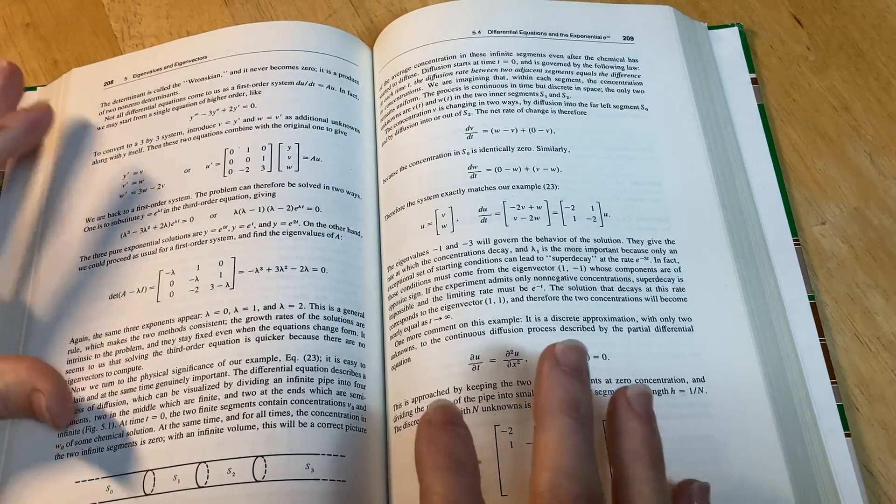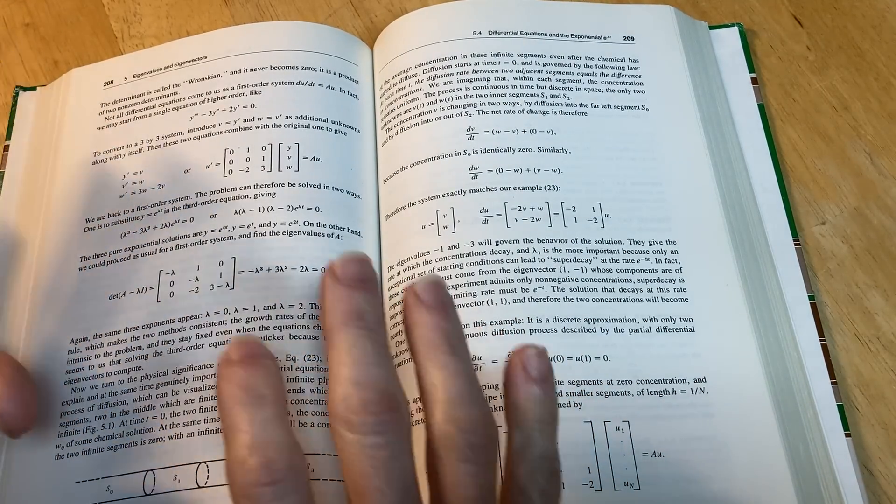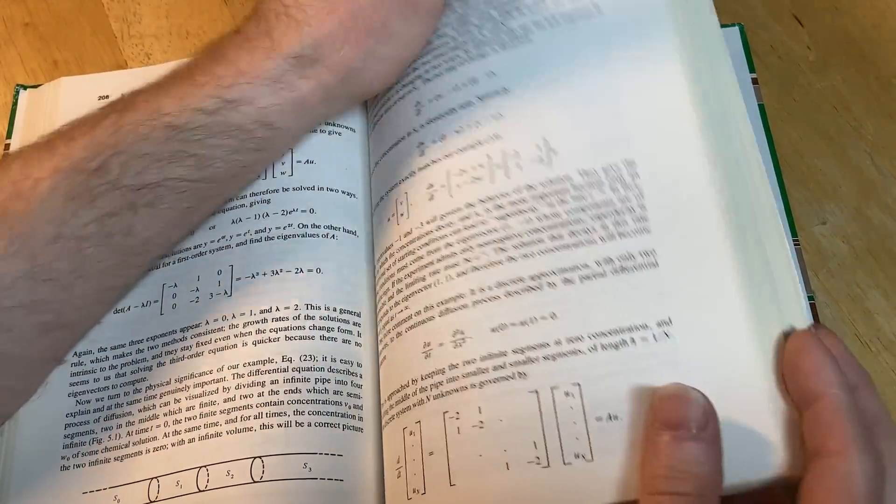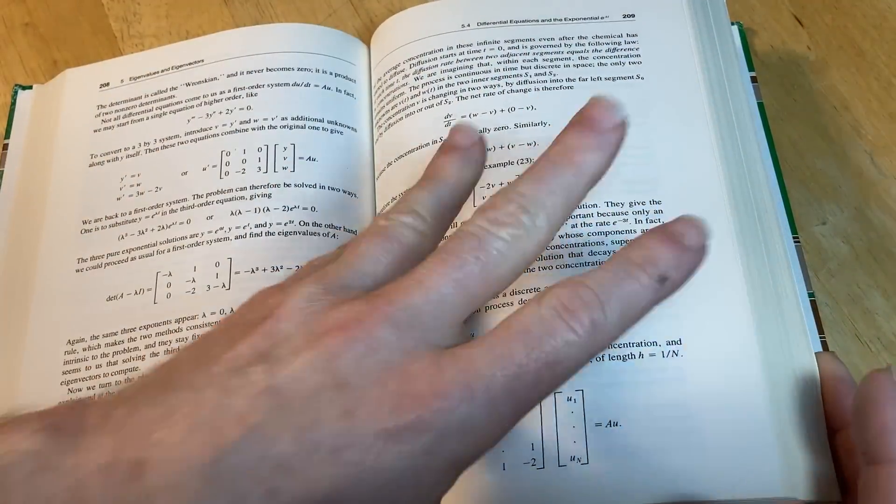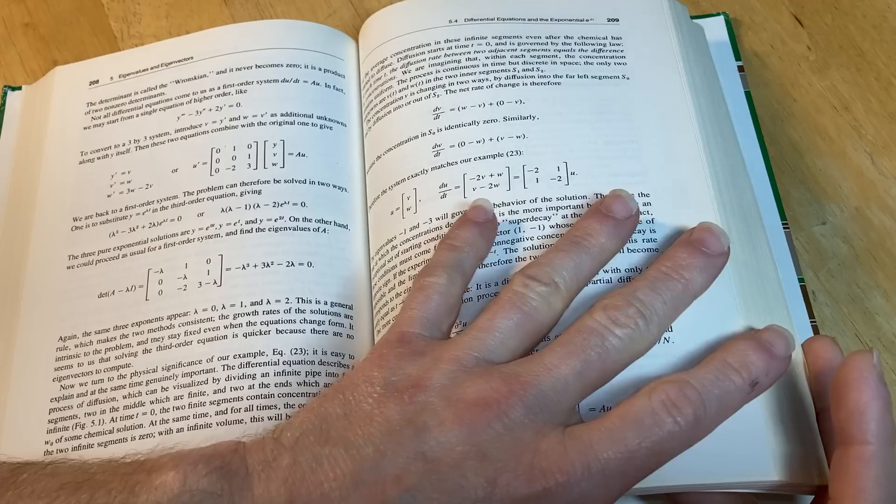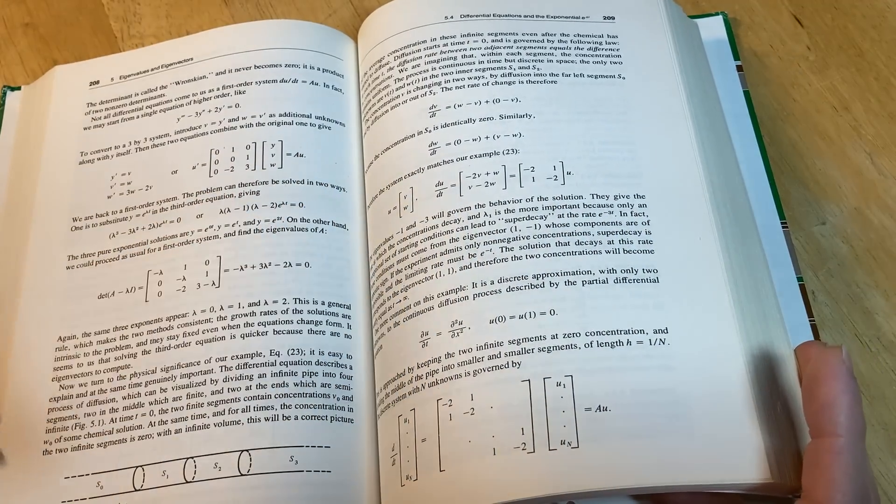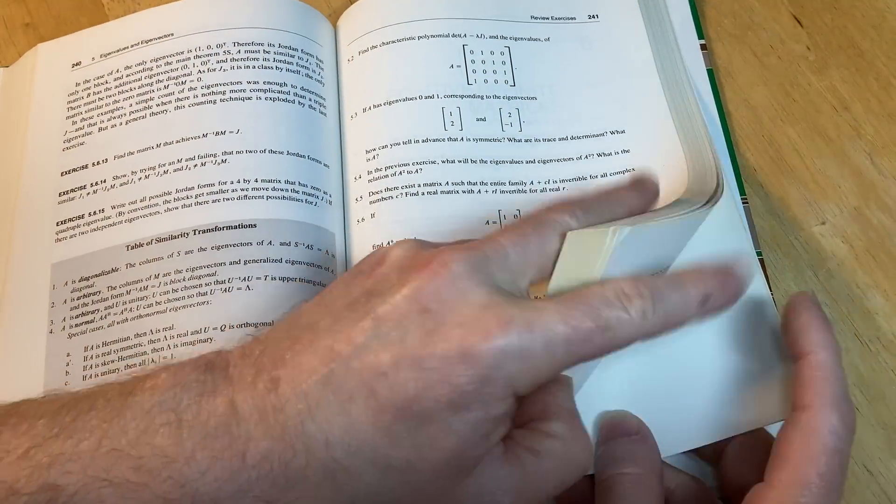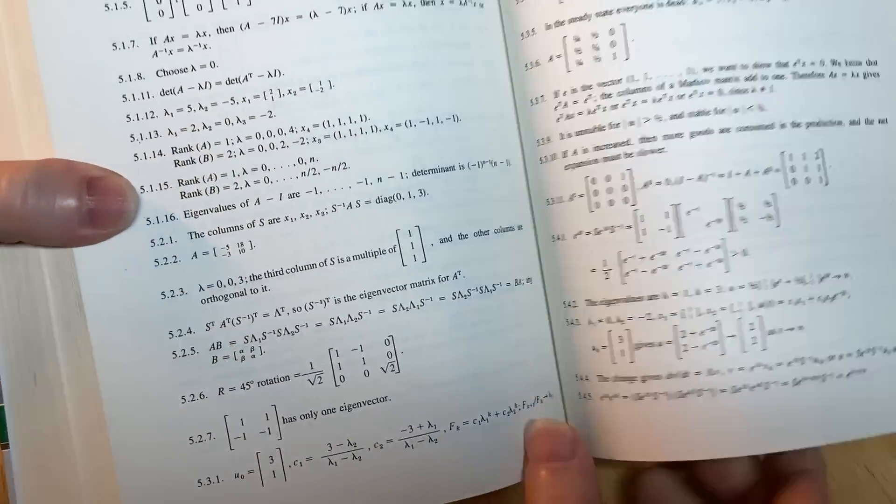This is a linear algebra book with answers to pretty much every single problem. There are a few that don't have answers, typically questions where they ask you to give examples of matrices and things like that, but for some reason I've noticed that a couple of those are missing.